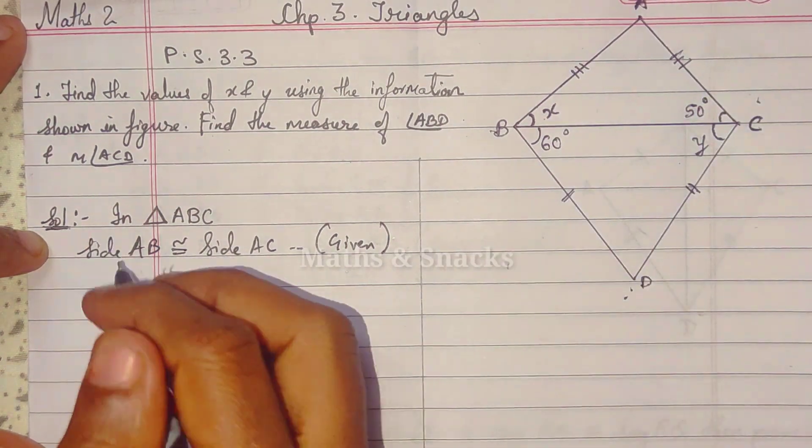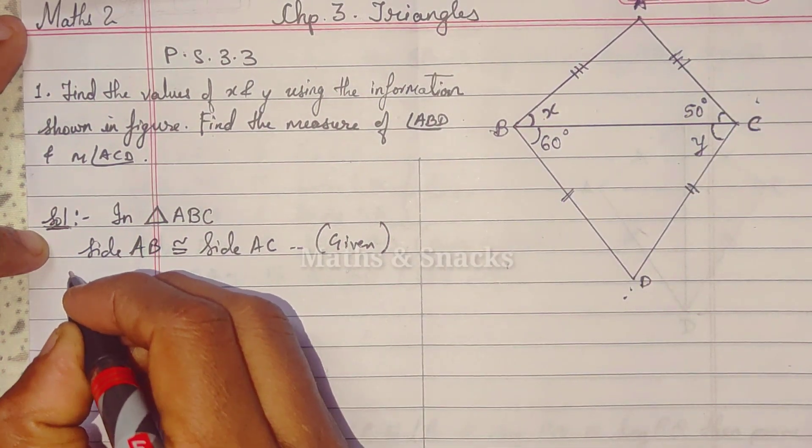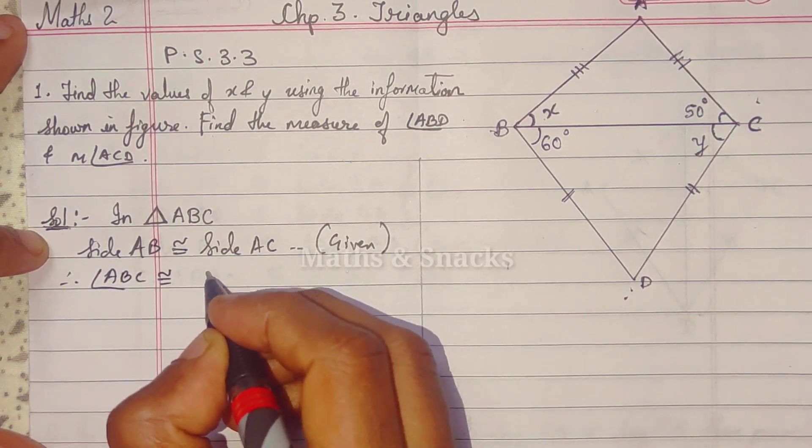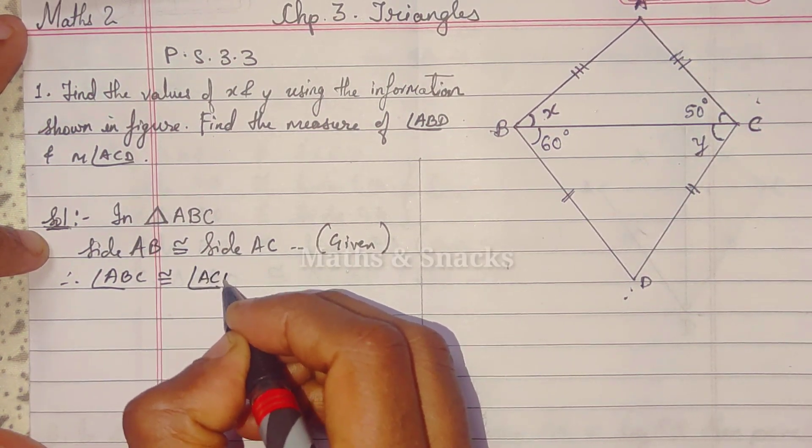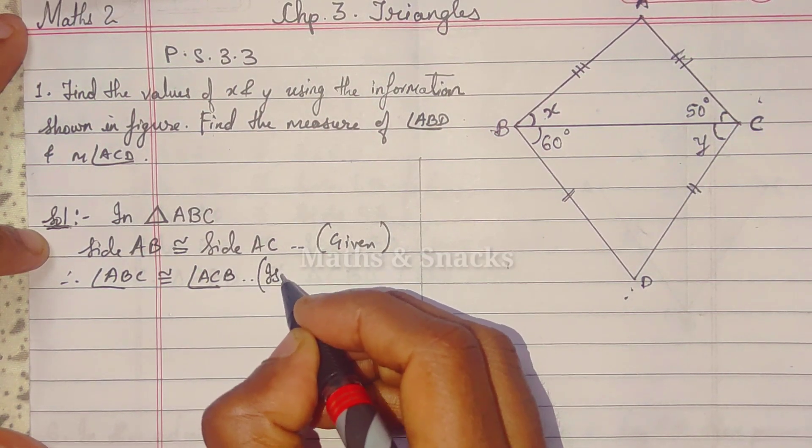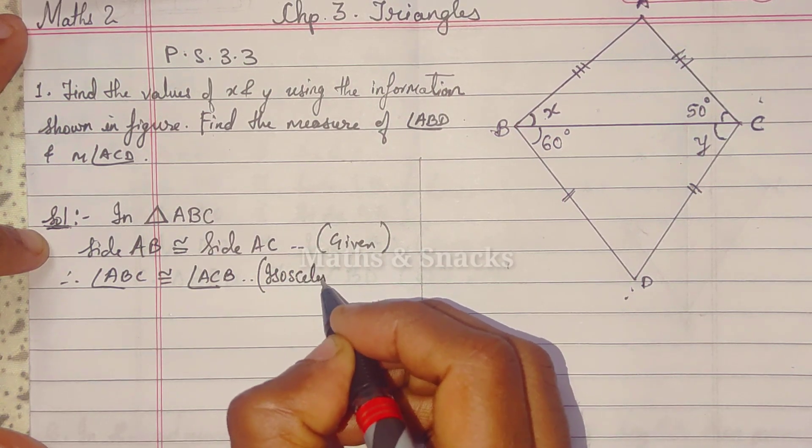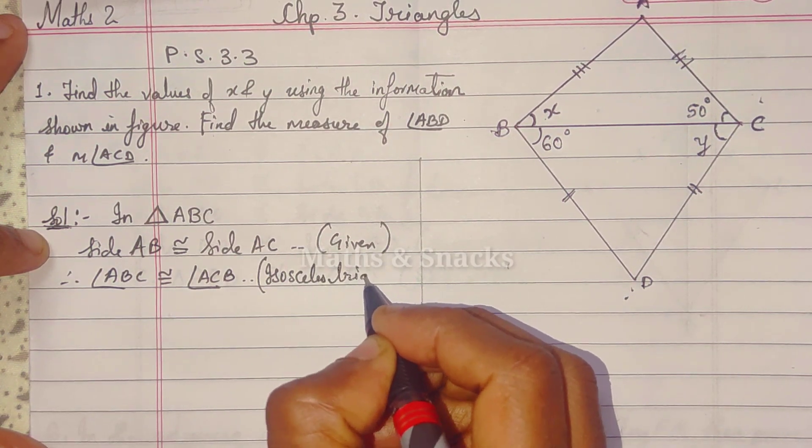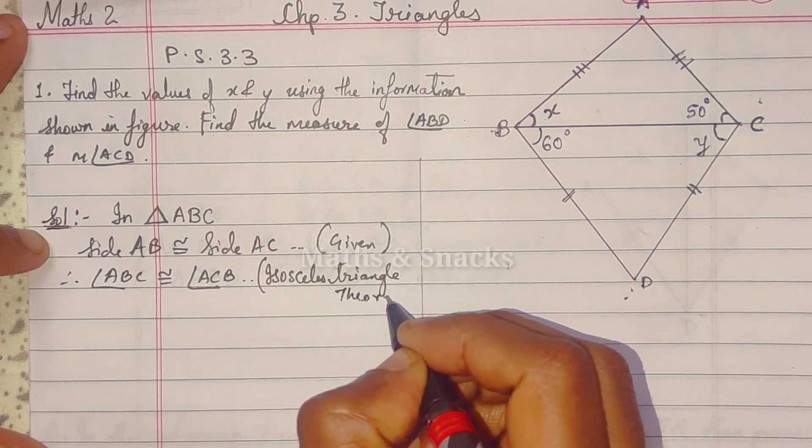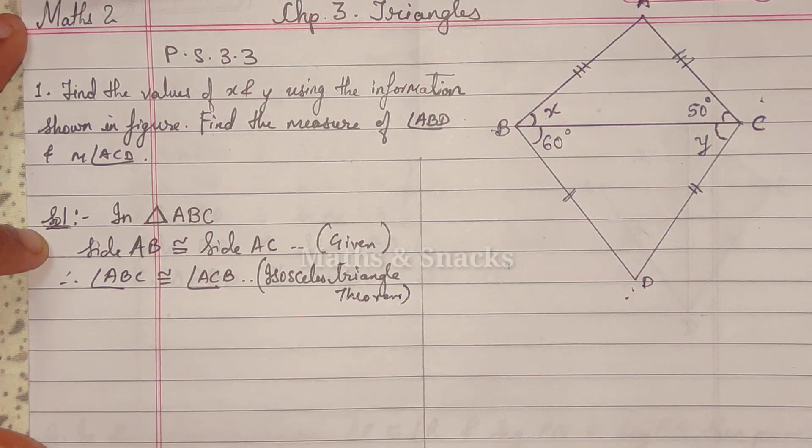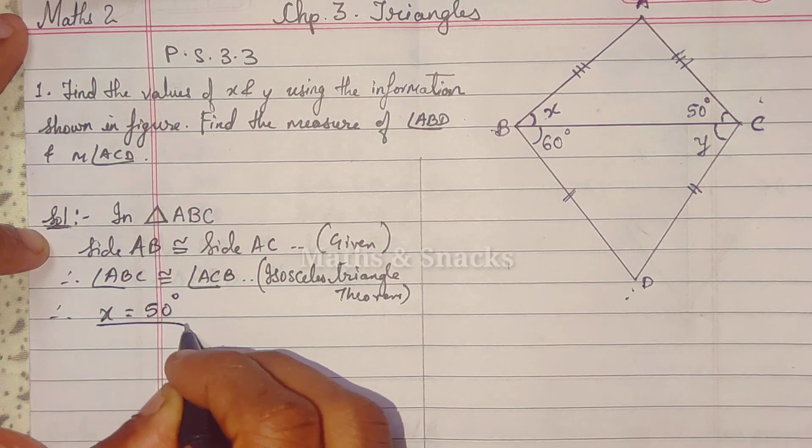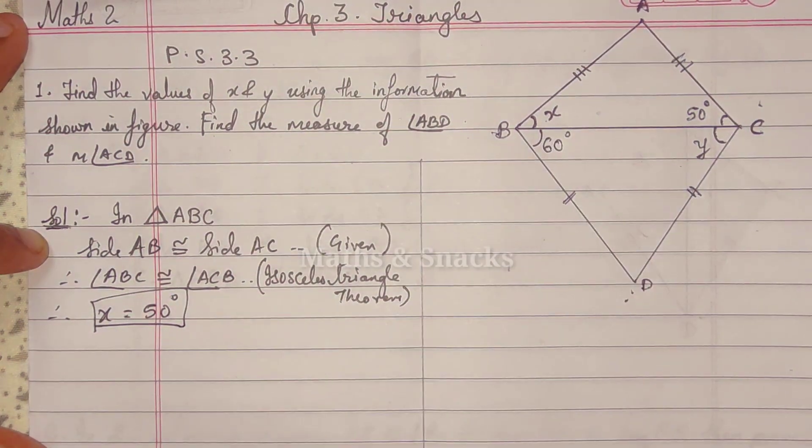So therefore, their opposite angles are also congruent. Angle ABC congruent to angle ACB by Isosceles Triangle Theorem. Okay? So therefore, x equals 50 degrees. First value we got. Okay?